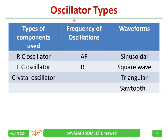Oscillator types based on components used: RC oscillator, LC oscillator, and crystal oscillator. Based on frequency, we have AF and RF. Based on waveform generation, we can classify them as sinusoidal, square wave, triangular, and sawtooth.